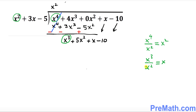Isn't it? So write down x on the top right up here, and now multiply this x with all the terms of the divisor outside. That's going to make x³ plus 3x² minus 5x.